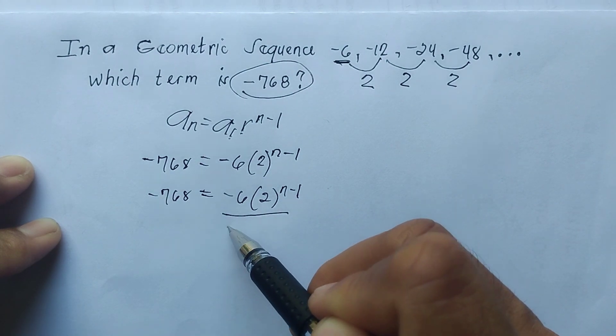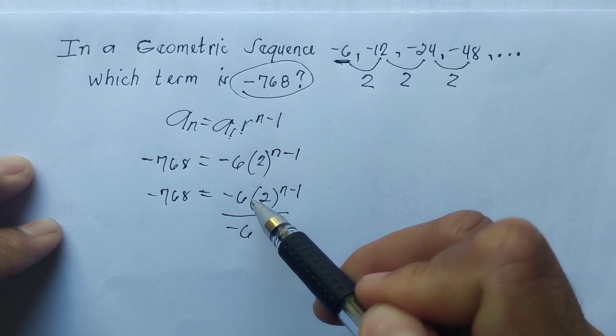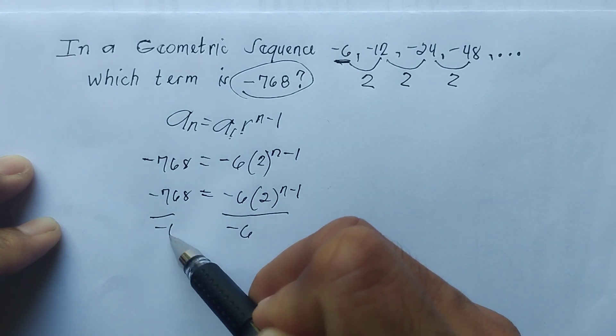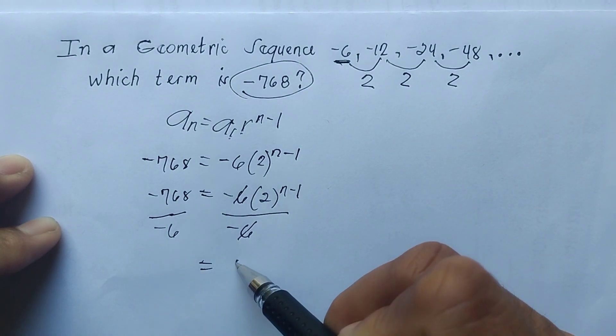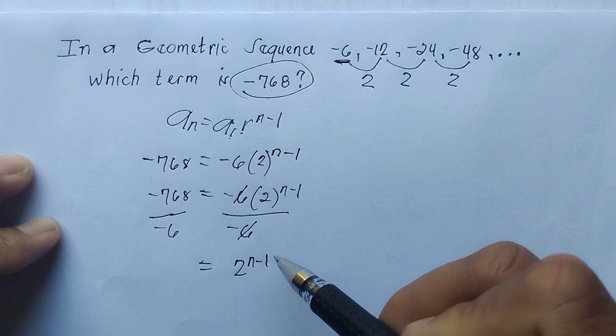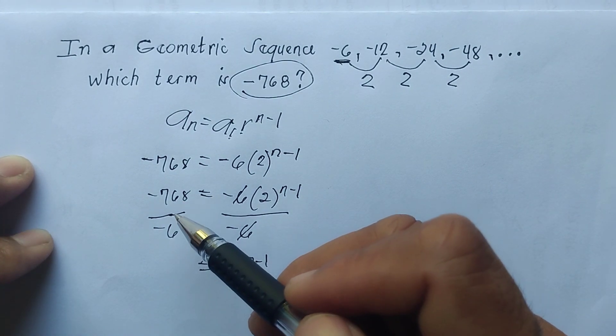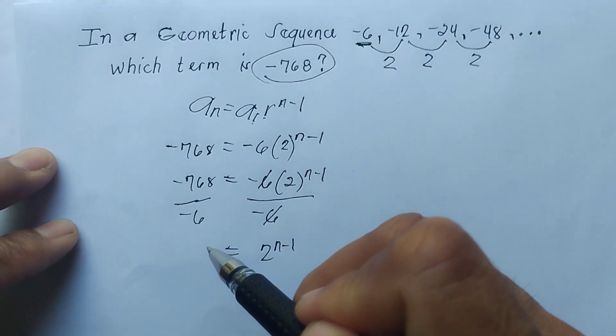We will divide this by -6 because -6 is what we call our numerical coefficient. That's the first process to do. Cancel out, cancel out, bring down 2 raised to the power of n minus 1. When you divide this you get the answer of 128, positive 128.